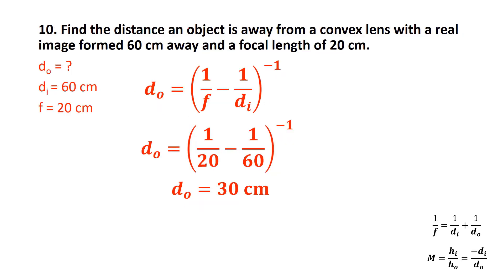Problem 9: Find the object distance for a convex lens with a real image 60 cm away and a focal length of 20 cm. Rearranging for DO: DO = (1/F − 1/DI) inverse. I type 1÷20 = minus (1÷60) = to get 0.03333, then inverse to get 30. The object distance is 30 centimeters.